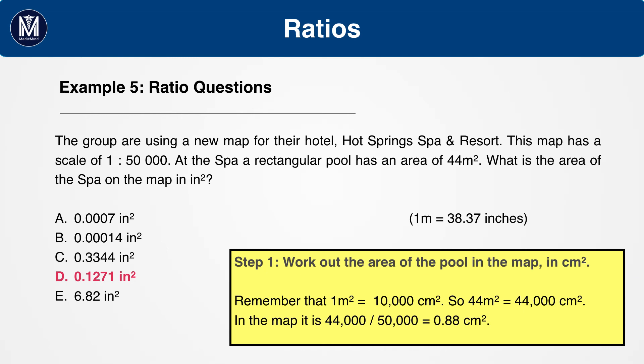The pool is therefore 44,000 centimetres squared in real life. The scale is 1 to 50,000. So do 44,000 divided by 50,000. Therefore, the area in the map is 0.88 centimetres squared.